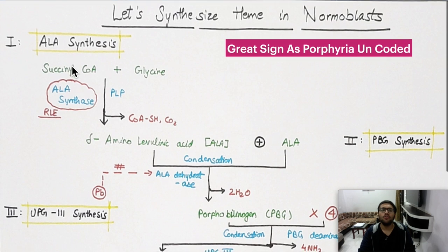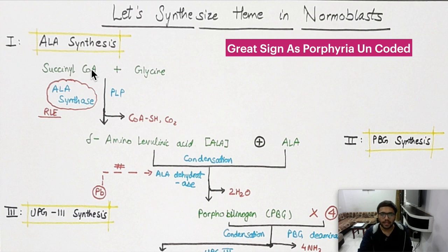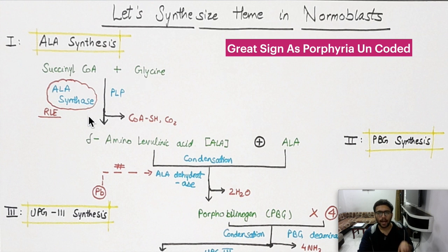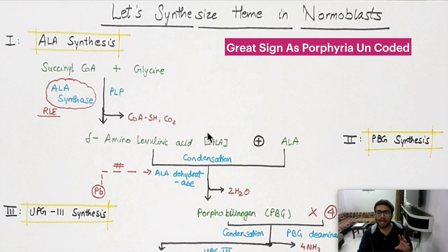Step 1: Formation of ALA (delta-aminolevulinic acid). Succinyl CoA combines with glycine in the presence of the enzyme ALA synthase, requiring the coenzyme PLP (pyridoxal phosphate). Coenzyme A is released and there is loss of CO2. This reaction produces delta-aminolevulinic acid.